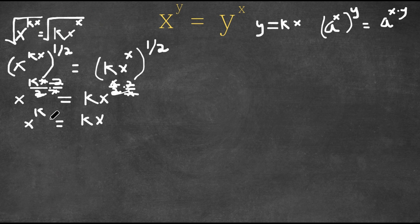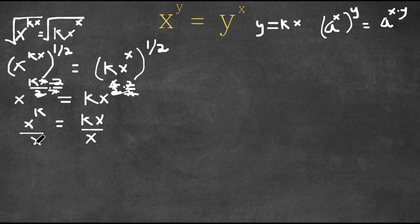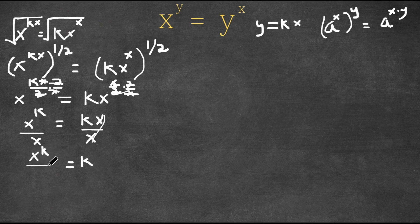So now we have x to the power of k equals k to the power of x. Now we divide both sides by x, and these cancel, leaving us with k equals x to the power of k over x.